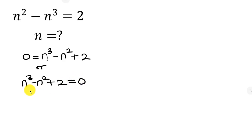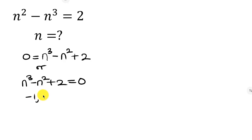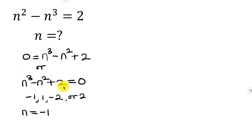Our goal is to find a number n such that the left hand side equals 0. For this kind of problem, we often try small easy numbers like negative 1, 1, negative 2, or 2. Let's try n = negative 1 and plug it into the left hand side to see if we get 0.